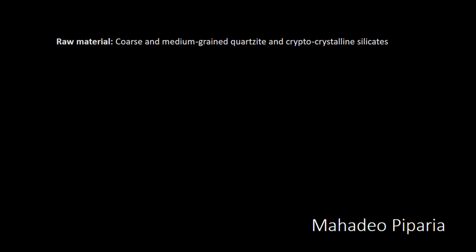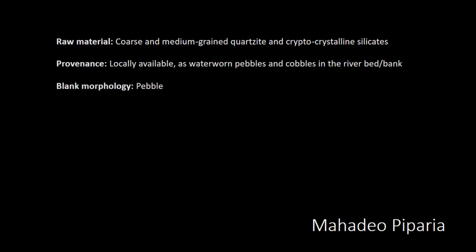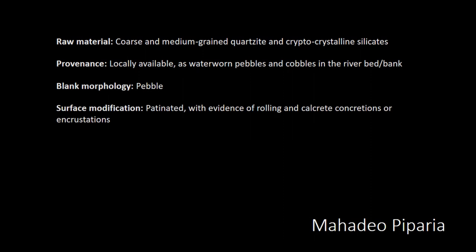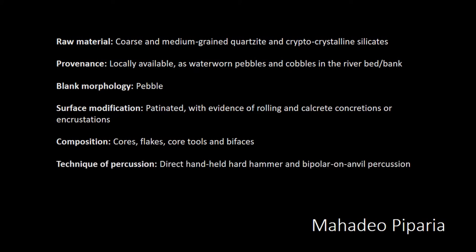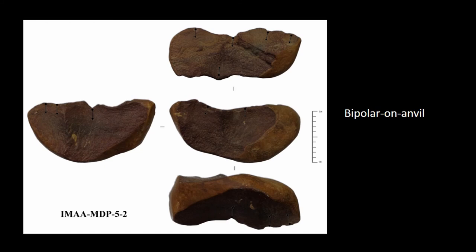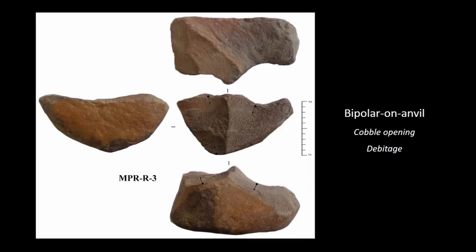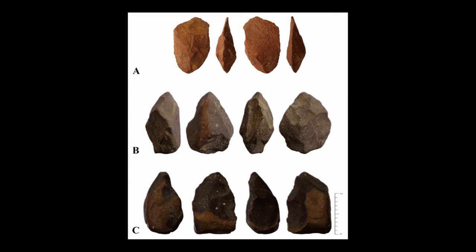At Madhya Pipriya, the raw materials are coarse and medium-grained quartzites as well as cryptocrystalline silicates, locally available from the streambed — the dominant blank morphology. There is evidence of rolling and calcification on the artefacts. The assemblage is composed of coarse flakes, core tools, and bifaces. It also indicates two techniques of percussion and three methods of flaking, with opportunistic being most dominant, followed by discoid and then centripetal. The bipolar anvil is applied in two forms: cobble opening, wherein pebbles and cobbles are smashed open to access a platform, and also flaking. There are bifaces including a cleaver and two crude bifaces made from cobbles.